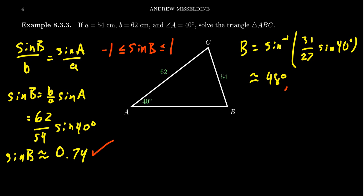We have 48 degrees as one possibility and we'll finish that one up shortly. The thing is, the sine function can't tell the difference between an angle and its supplement — it can't distinguish between an acute and an obtuse angle, because sine gives a positive ratio in both the first and second quadrants. So we must consider the possibility that B is obtuse: 180° − 48° = 132°. We have to consider both possibilities.